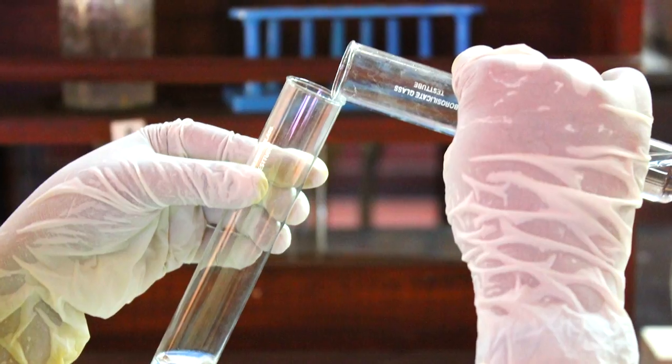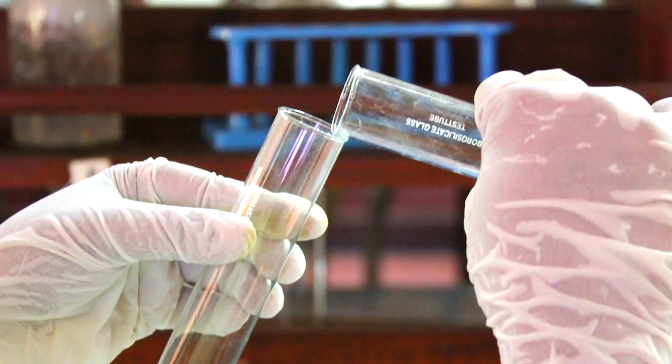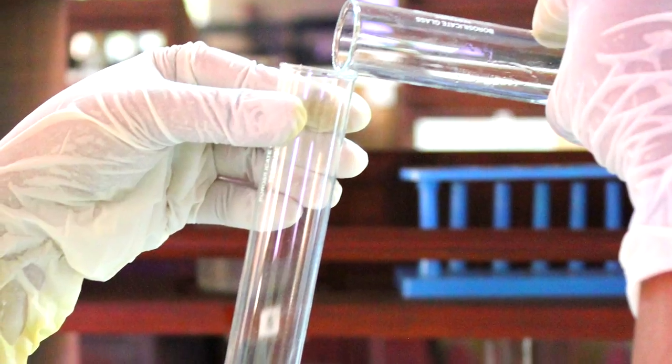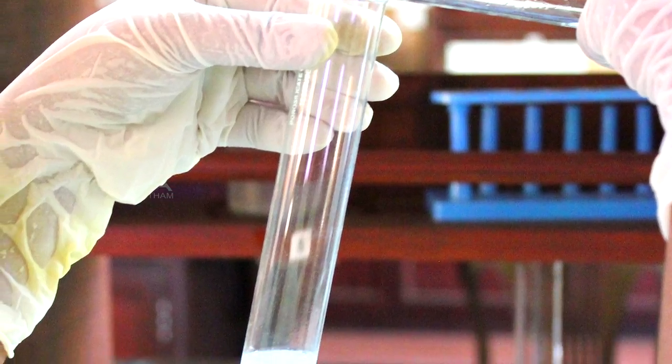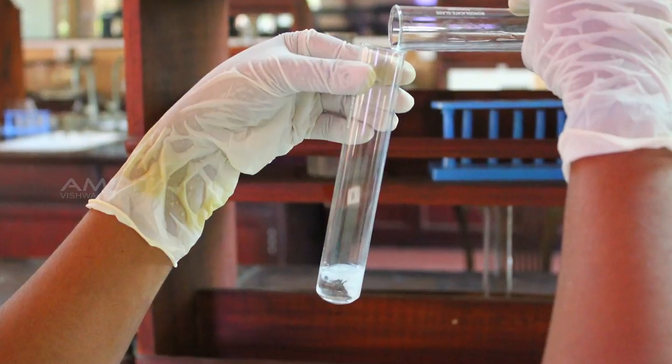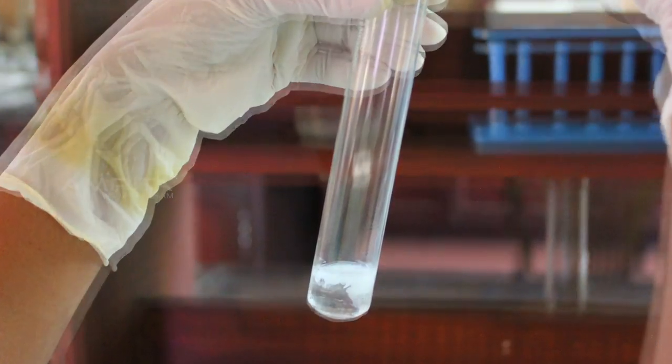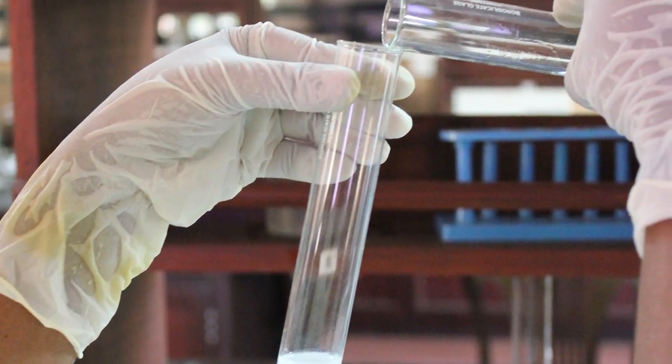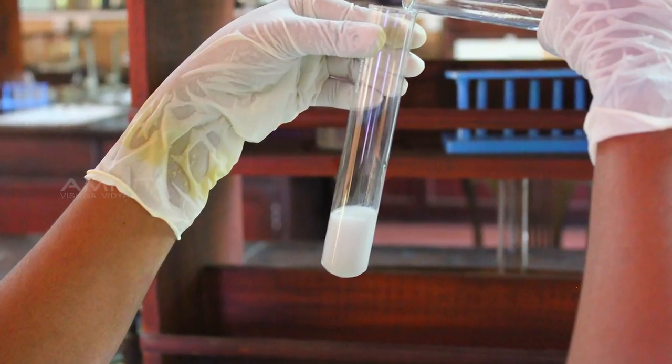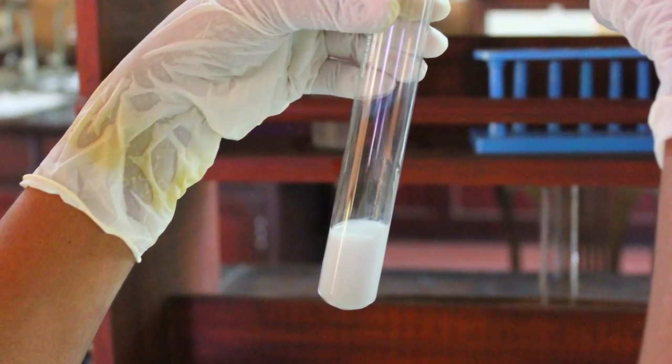Pour the barium chloride solution into the boiling tube containing sodium sulphate solution. On adding, a white precipitate of barium sulphate is formed in the boiling tube. This confirms the presence of sulphate ions in the solution.